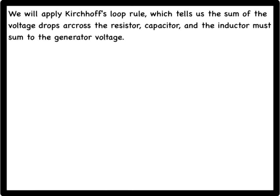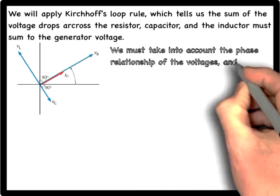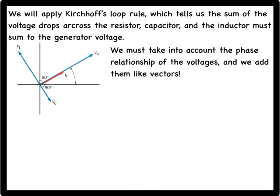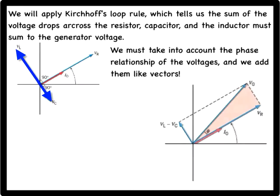However, we have to take into account the phase of the voltages, since the voltage phasors point in different directions. We add these voltages in the same way that we add vectors. Since VL and VC point in opposite directions, they sum to give the resultant VL minus VC.